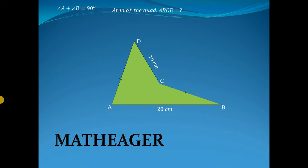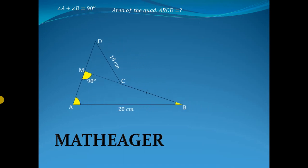For the solution, produce BC to M. Since these two angles sum to 90 degrees, then the third angle must be 90 degrees, which makes this triangle a right-angled triangle. Not only this biggest triangle, but also the small triangle will become a right-angled triangle.